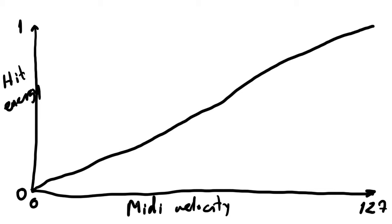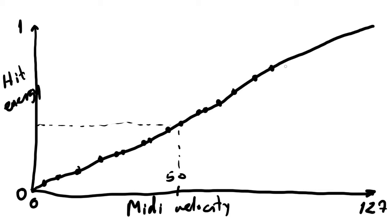Whenever we have a hit at a certain MIDI velocity — for instance, let's say we have 50 around here — we have a corresponding hit that should be played at the corresponding hit level. These are actual wave samples recorded from a recording session. Let's say that this is the snare drum. So we have a huge number of samples.